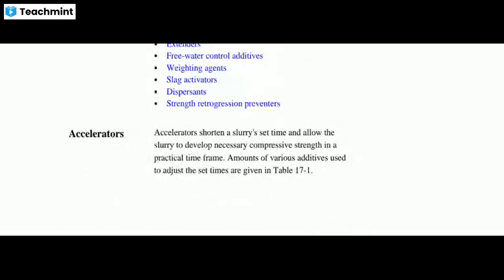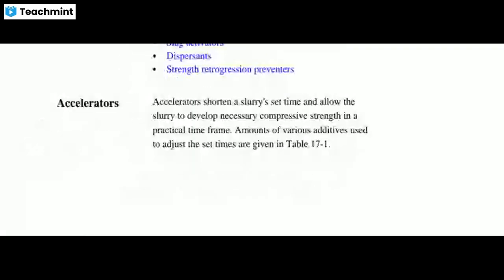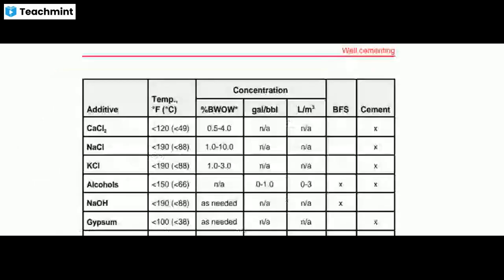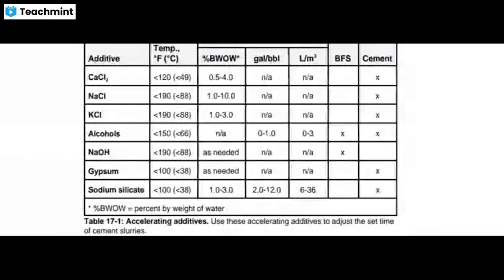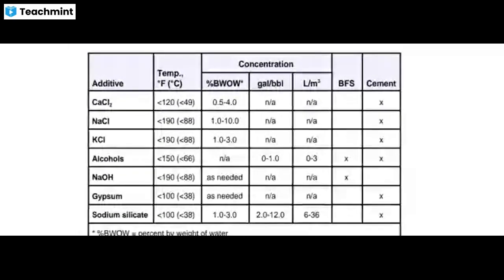Accelerators shorten slurry set time and allow the slurry to develop the necessary compressive strength in a practical time frame. The amounts of various additives used are listed in the following table. These are the well cementing additives: calcium chloride, sodium chloride, KCl, alcohol, sodium hydroxide, gypsum, and sodium silicate — accelerating additives used to adjust the set time of cement slurries. Concentration is also shown.